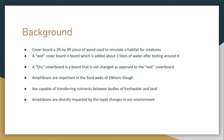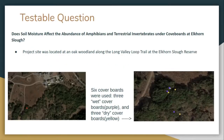We wanted to do this project because we know amphibians are important in maintaining the food web of Elkhorn Slough and are capable of transferring nutrients between ponds and land. But the population of amphibians is rapidly declining due to rapid changes in our environment. Our testable question was: does soil moisture affect the abundance of amphibians and terrestrial invertebrates under coverboards at Elkhorn Slough?